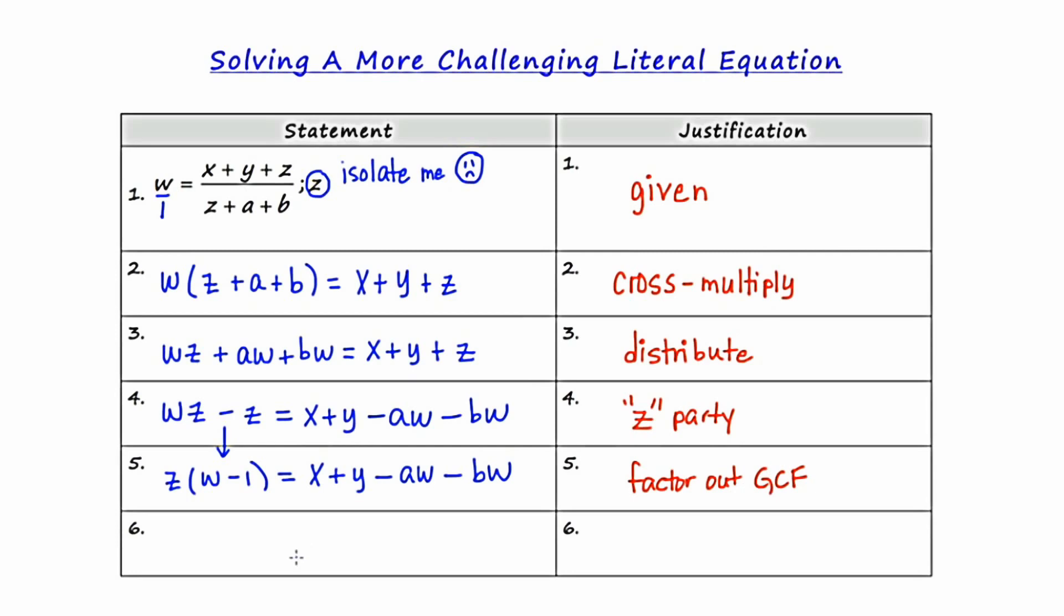Now my last step is to get Z completely by itself. So I need to get rid of the expression W minus one. And to do that, I'm simply going to divide each side by W minus one. And the final justification is going to be division.